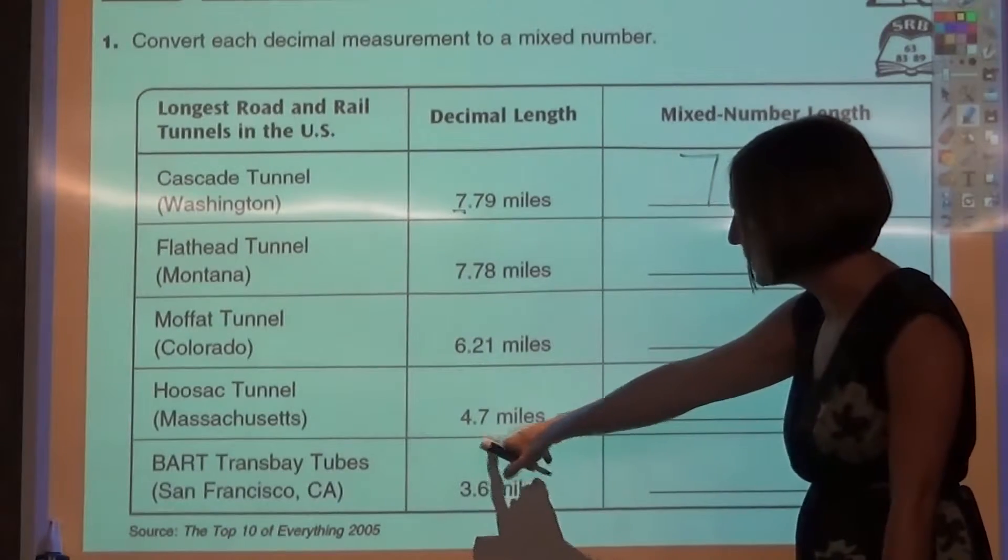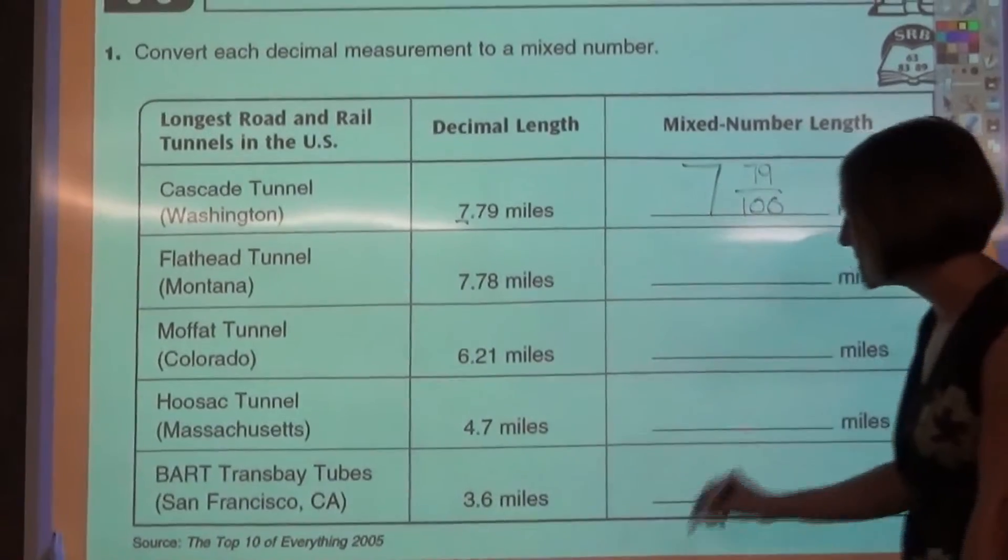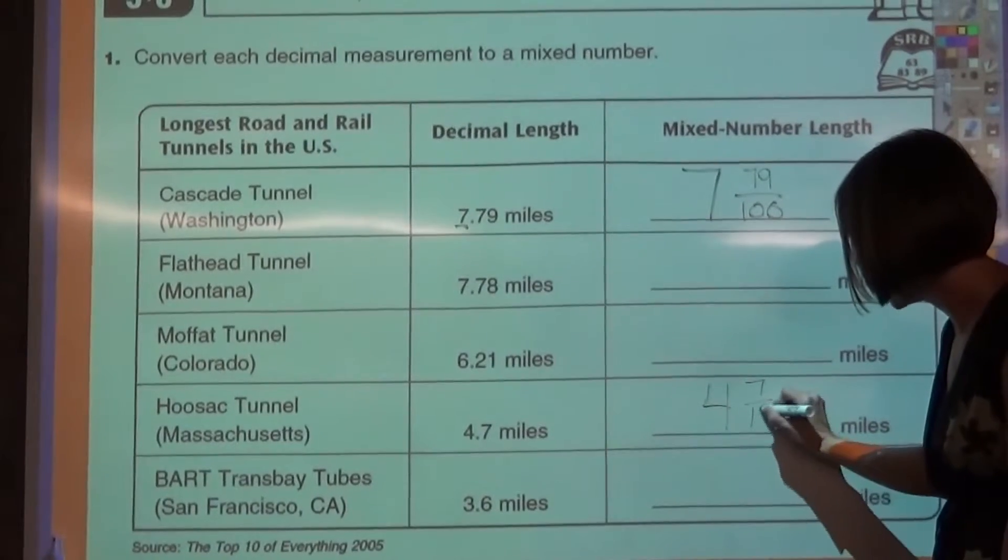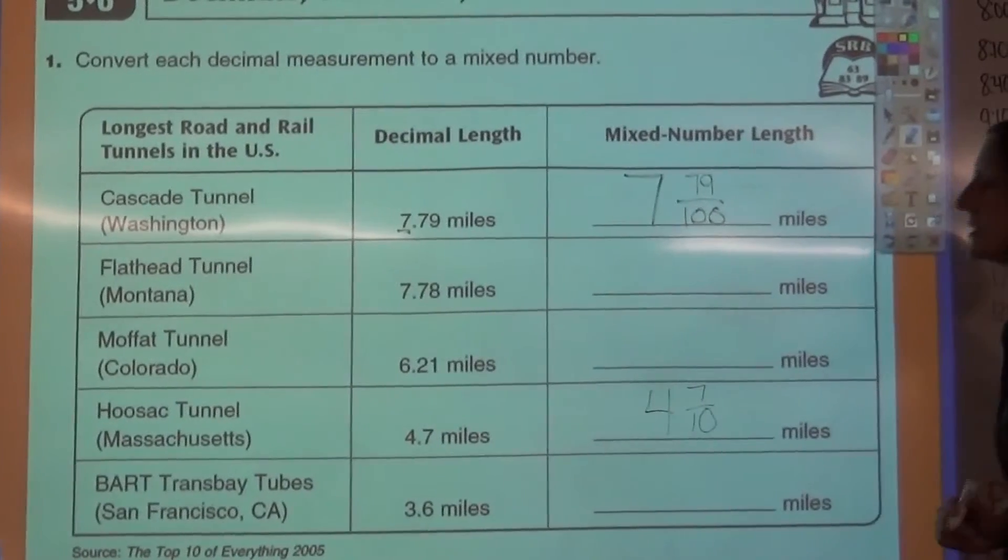Let's take a look at this one down here. We have 4 and 7 tenths. So again, 4 is my whole number. 7 tenths as a fraction looks like this. So 4 and 7 tenths.